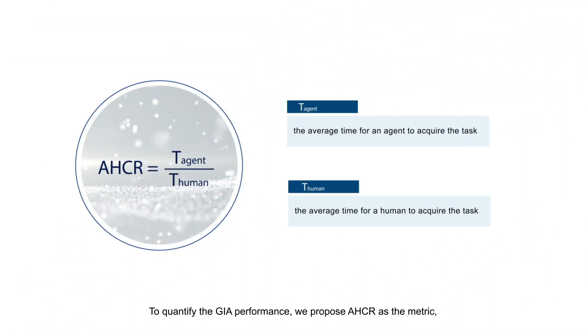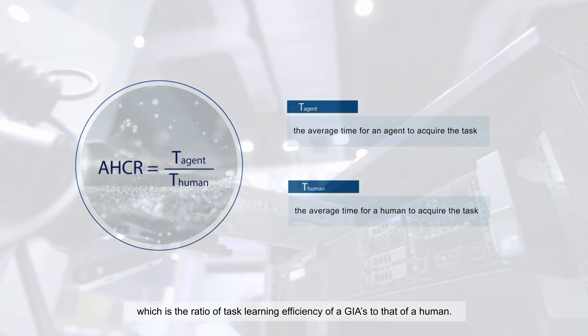To quantify the GIA performance, we propose AHCR as the metric, which is the ratio of task learning efficiency of a GIA to that of a human.